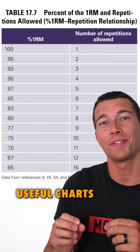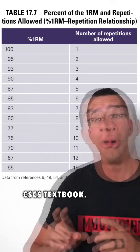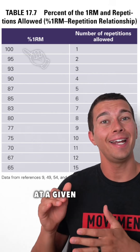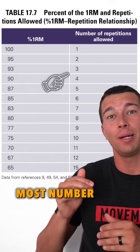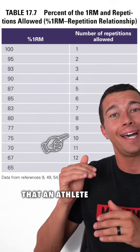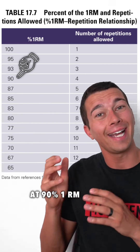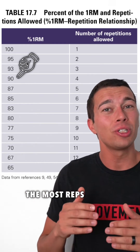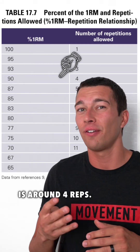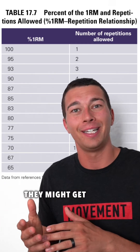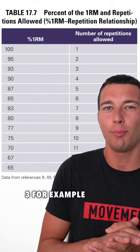This is one of the most useful charts from the CSCS textbook. What this chart is telling us is that at a given percent one rep max, what is the most number of reps that an athlete could do? On average, at 90 percent one rep max, the most reps that an athlete could do is around four reps. On a good day they might get four or five reps; on a bad day, they might get three.